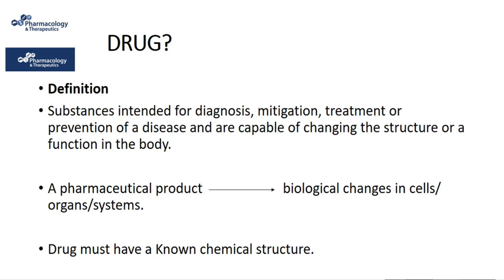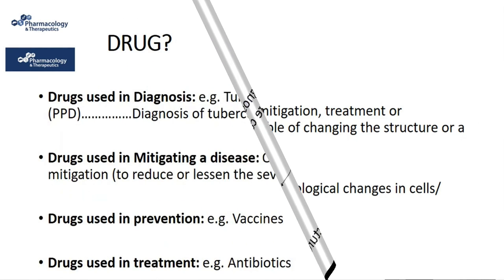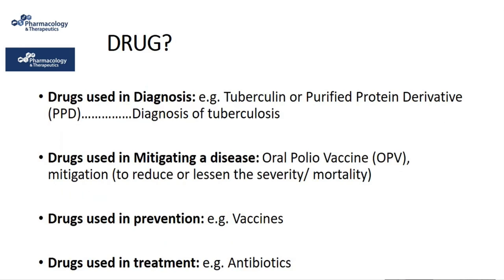An established drug must have a known chemical structure. As has been said, drugs can be used in diagnosis, mitigation, prevention and treatment of a disease.